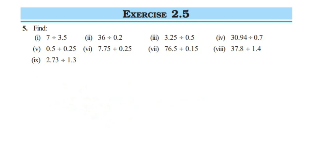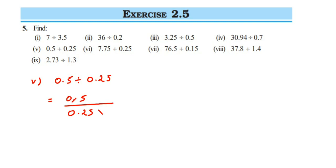Fifth question: 0.5 divided by 0.25. Removing the decimal from 0.5 — one digit — gives 10 in the denominator. Removing the decimal from 0.25 — two digits — gives 100 in the numerator. Cancel 5 ones are 5, 5 fives are 25. Then cancel 5 and 100: 5 twenties are 100. Then cancel 10 and 20: 10 twos are 20. The answer is 2.